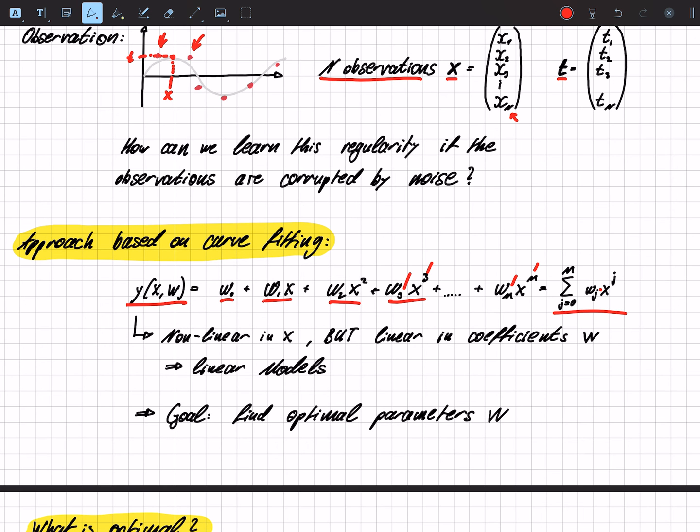So we have a non, our function is non-linear in the x, but it's linear in the coefficients w. And the coefficients w are those coefficients that we can adapt.